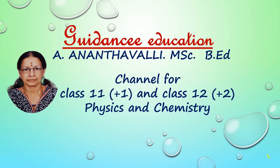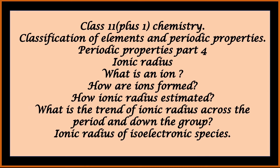Hello everybody, welcome to my YouTube channel. We are continuing Class 11 Chemistry: Classification of Elements and Periodic Properties, Part 4. Under that we will discuss ionic radius: what is an ion, how are ions formed, how ionic radius is estimated, the trend of ionic radius across the period and down the group, and ionic radius of isoelectronic species. This topic is very important and questions are asked from it.